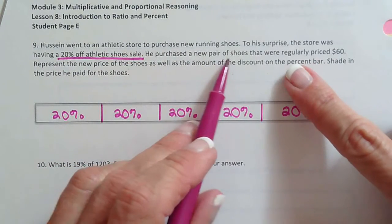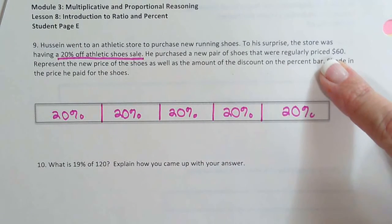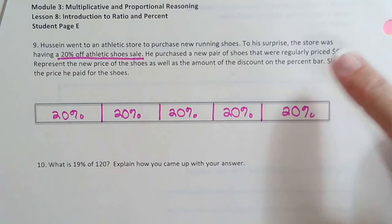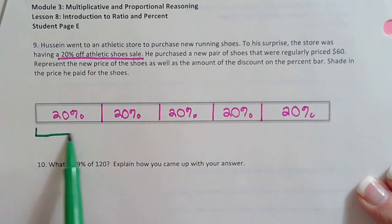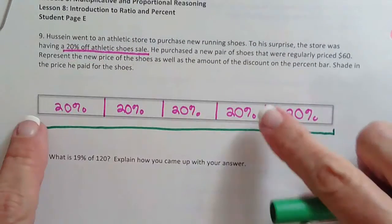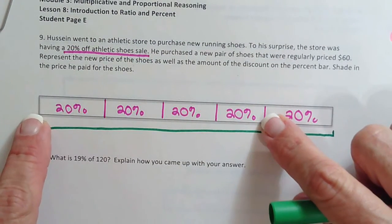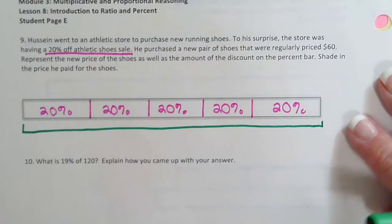So these little bars are really cool. He purchased a new pair of shoes that were regularly priced $60. So this is where you have to stop and think. Regularly priced. So don't you agree that that would have to be this? It didn't say they were discounted to $60. They said regular. And wouldn't you agree that the regular price would be the unit, the whole?